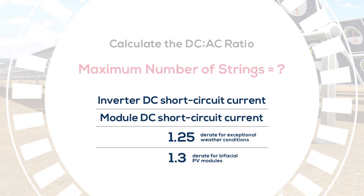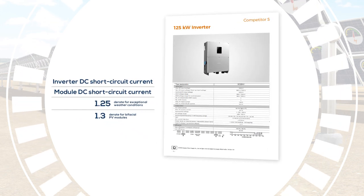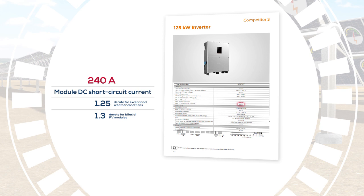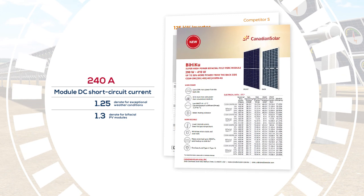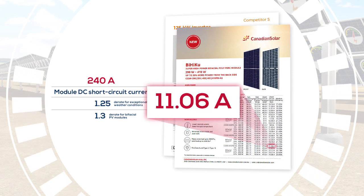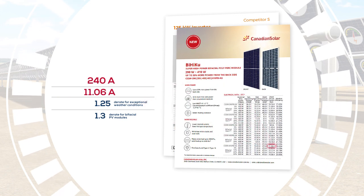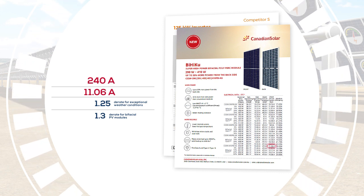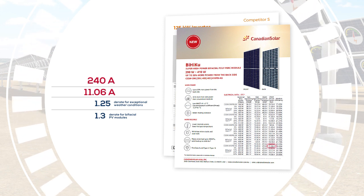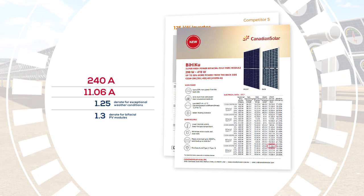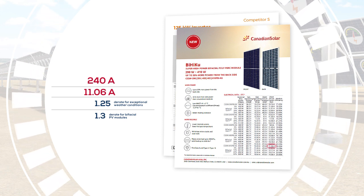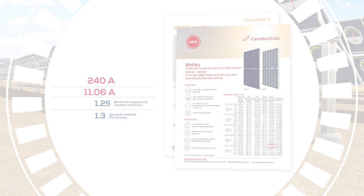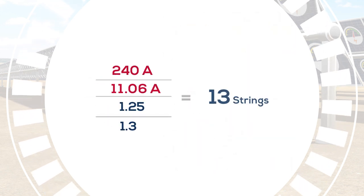With our competitor's 125-kilowatt inverter, the short circuit rating is 240 amps. The BiHiKu module delivers a short circuit current of 11.06 amps at standard test conditions. So the maximum number of strings is 240 divided by 11.06, divided by 1.25, divided by 1.3, which yields 13 strings maximum.